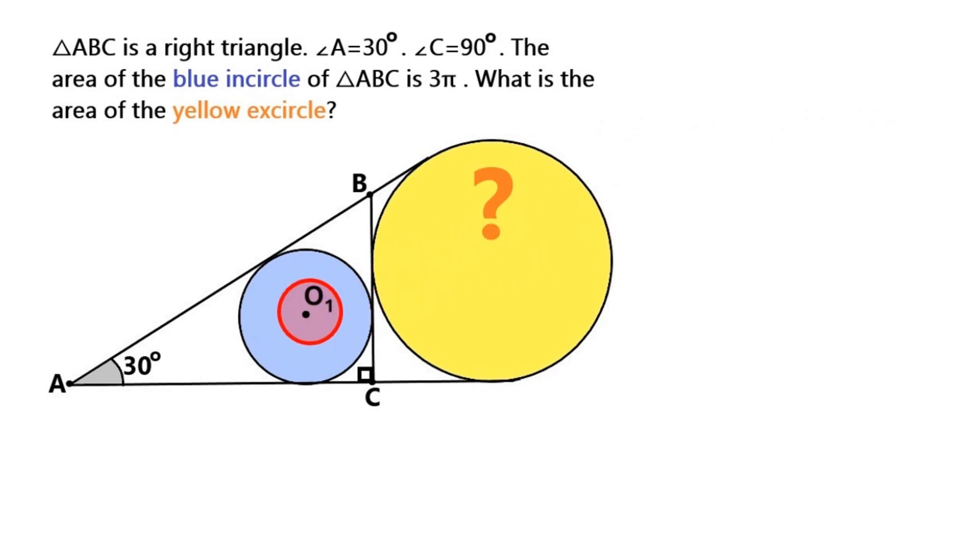Let this point O₁ be the center of the blue circle and let's draw these two radii like this and we'll call them r. We don't know what r is, but we know the area of the blue circle is 3π, so it shouldn't be a big deal to conclude that r is the square root of 3.